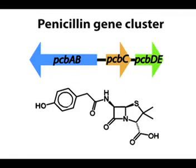One major part of fungal metabolism is devoted to the production of small molecules, such as pigments and toxins. These small molecules are known as secondary metabolites. Perhaps the most famous secondary metabolite is penicillin, which is produced by a cluster of three genes.